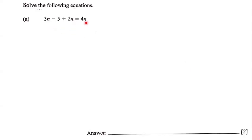Here we have this linear equation and our goal is to solve it. Notice that we have 3n minus 5 plus 2n equals 4n. The first thing we're going to do is...